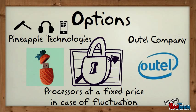In this agreement, they state that if the market fluctuates too much, Pineapple Technologies will have the option or right to acquire the processors from the Outtel company at a convenient price for both companies stated in the contract. This reduces the risk of Outtel company stopping the production of processors and ensures Pineapple Technologies that there will be processors available for their devices.